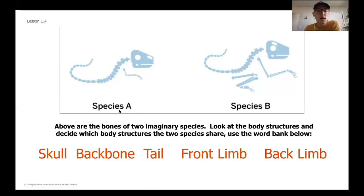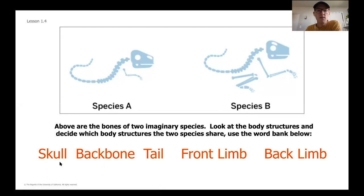We've got Species A and Species B — they're both imaginary species. I want you to look at the body structure. We've been starting to talk about why body structure is important for evolutionary scientists. Look at these five different structures in orange and go ahead and pause the video to write out or think through which structures both species A and B share from that list.